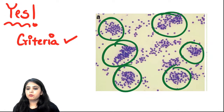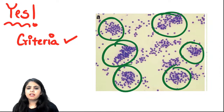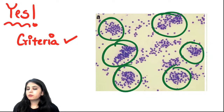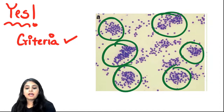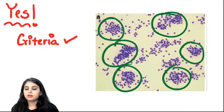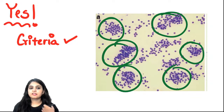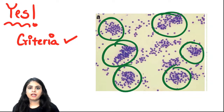The last example: now I can see clusters - one, two, three, four, five, six - at least six clusters, all with roughly more than 10 cells on average. Yes, this is adequate. I can proceed with Bethesda reporting on this slide.